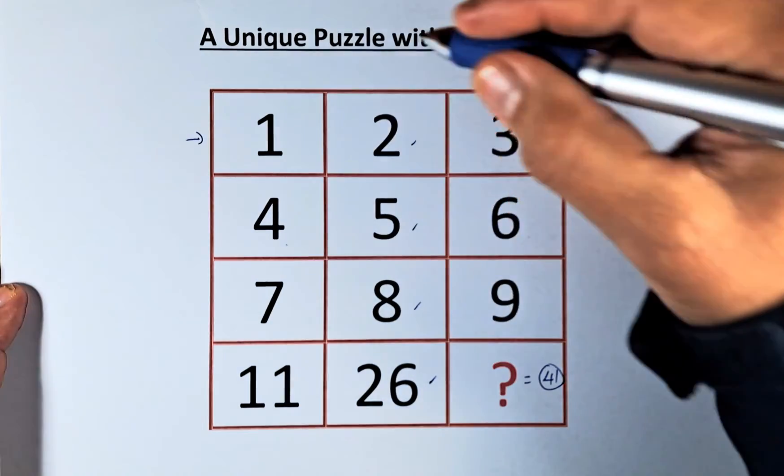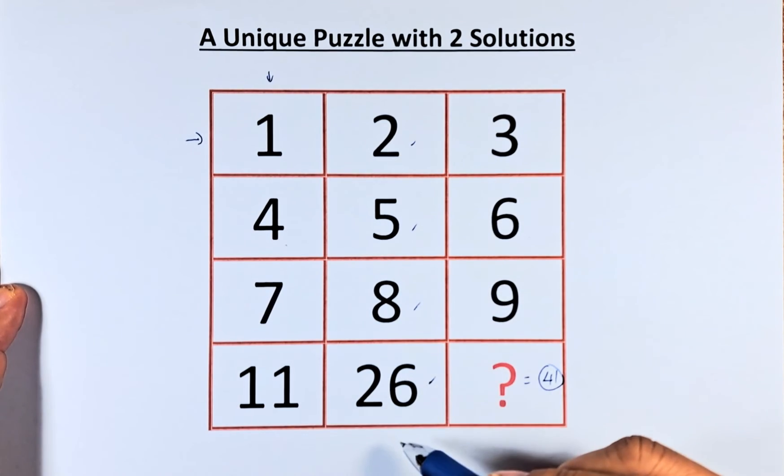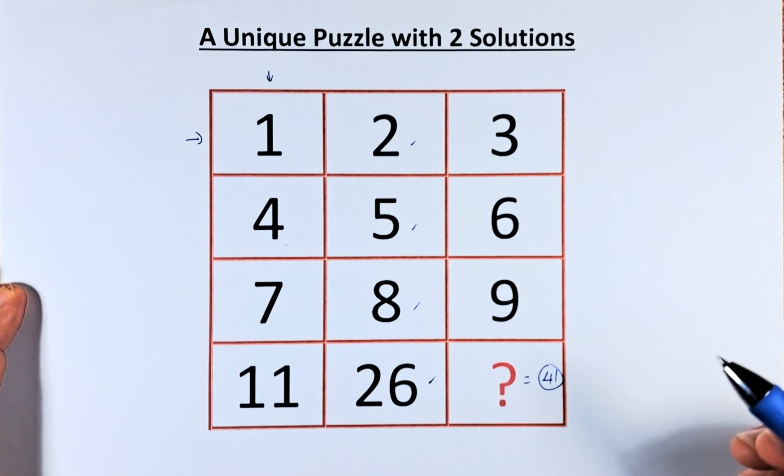The next solution is found by doing the column. So 1, 4, 7 equal to 11. 2, 5, 8 equal to 26. 3, 6, 9 equal to question mark.